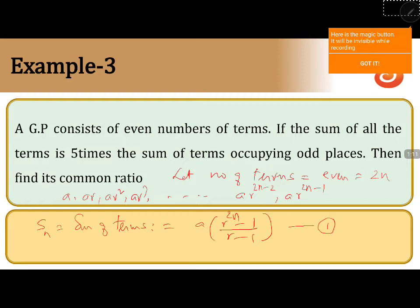Now, you can see that the odd-positioned terms are a, ar², ar⁴, and so on. Half of the terms are in even positions and half are in odd positions, so there will be n terms in odd places.